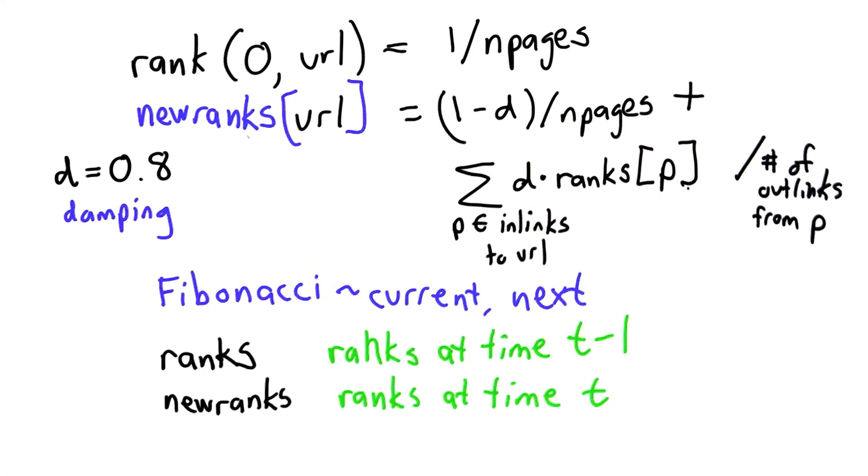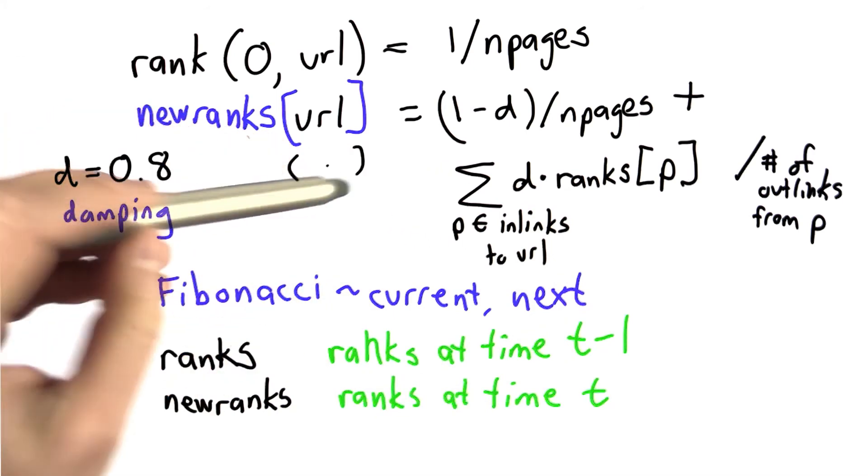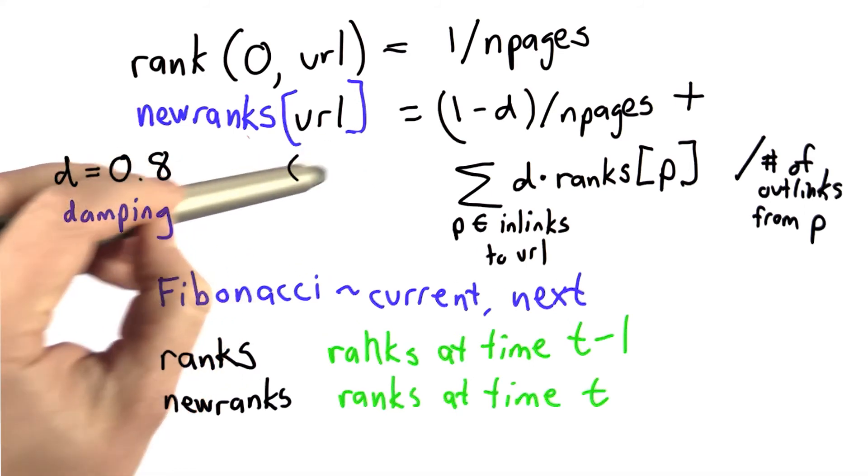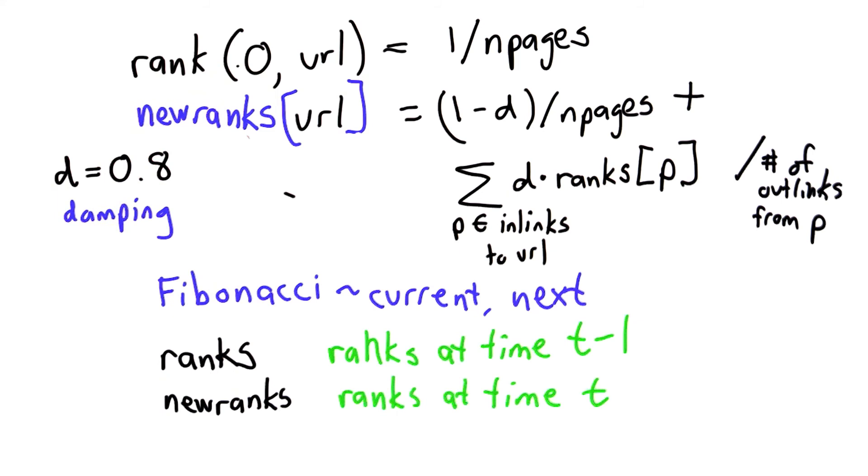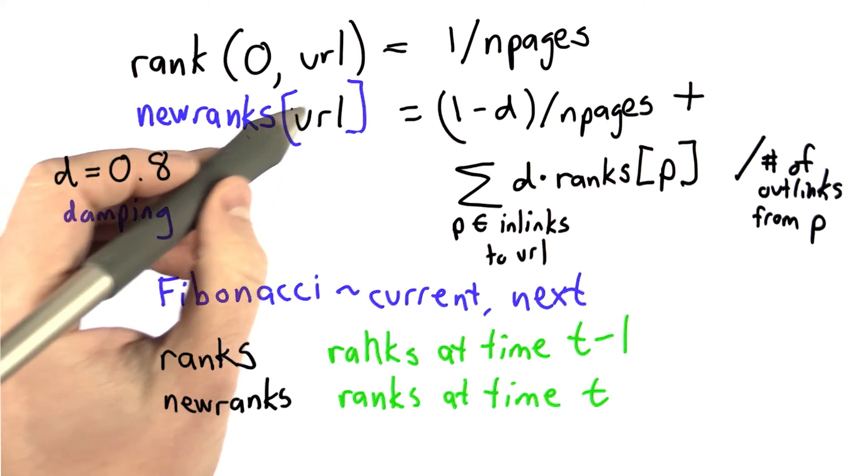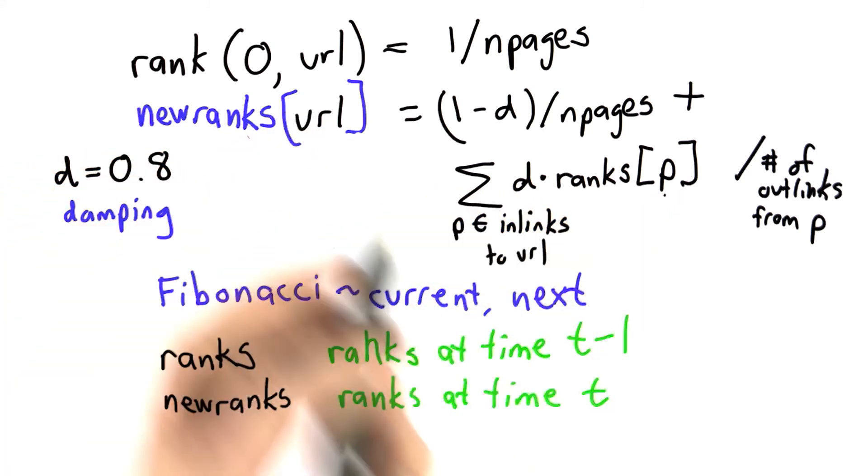The other change I slipped in: before we had parens here, and I've changed them to square brackets. Square brackets should give you the idea that this might be a data structure that we're indexing, and that's correct. We want to index the data structure, and we want to index it by the URL that we're looking for. And the Python dictionary provides a great way to do that.